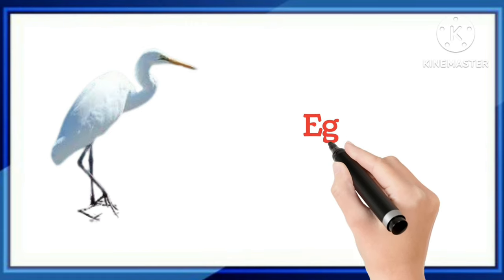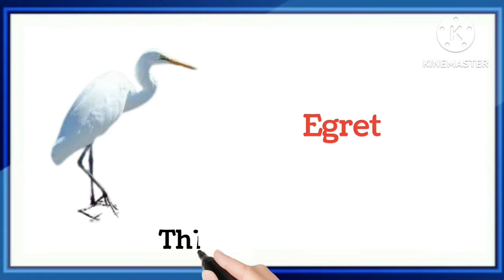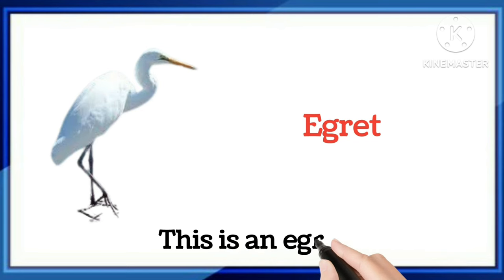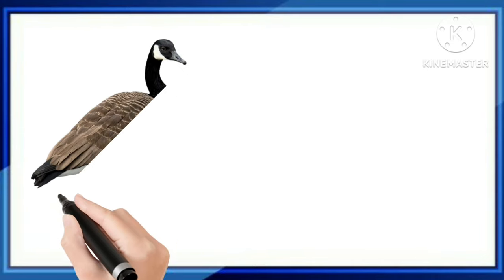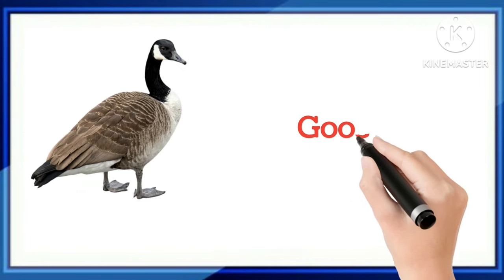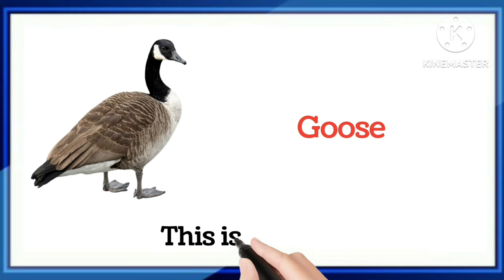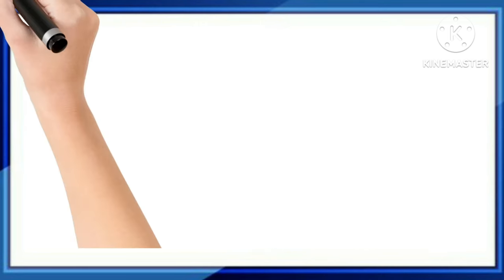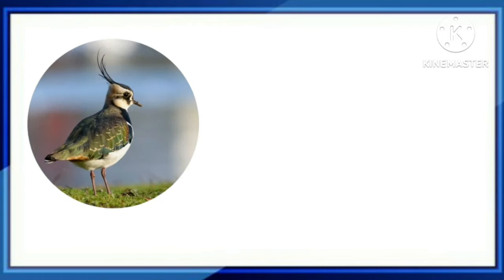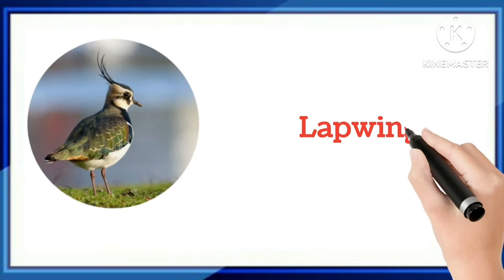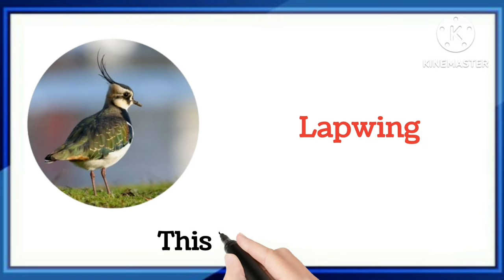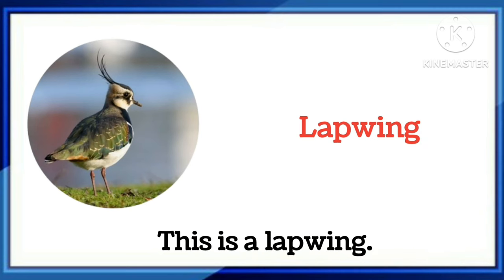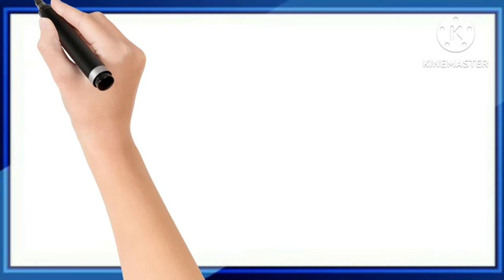This is a duck. Which word is this? This is a duck. And which word is this? This is a goose. And which word is this? This is a lapwing. Say with me: this is a lapwing.